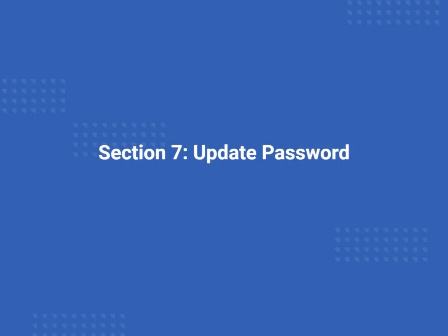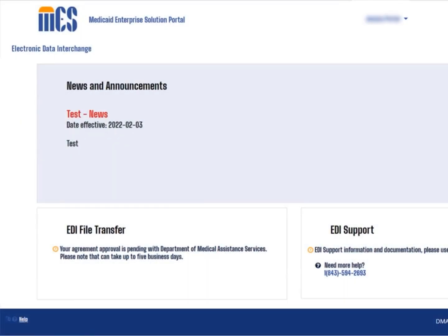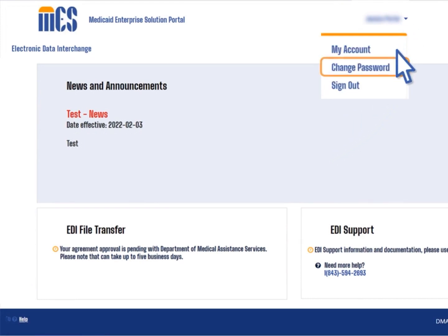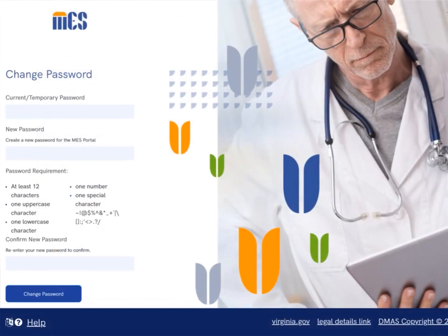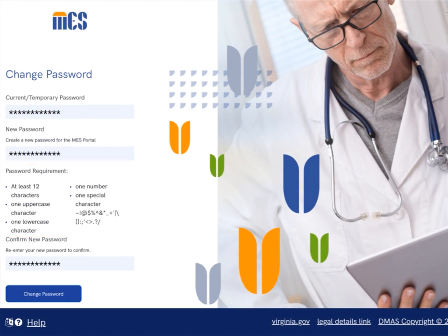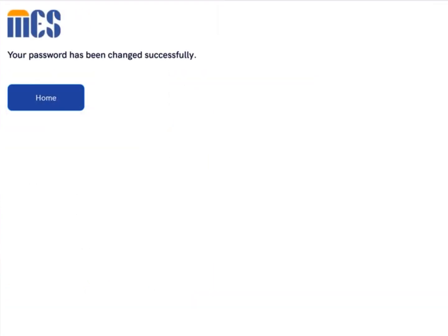The final type of update you can make in the EDI portal is to change your MEZ password. From the EDI portal, select the drop-down arrow next to your email address and choose the change password option. When the change password page displays, enter your current password. Next, enter your new password ensuring it meets the guidelines listed on the page. Then re-enter the new password and confirm it matches before selecting the change password button. When the system displays a confirmation that the password has been successfully changed, select the home button to return to the MEZ portal landing page.